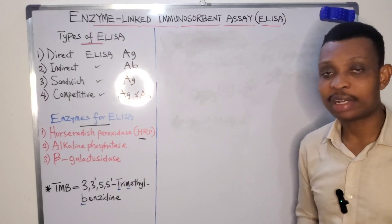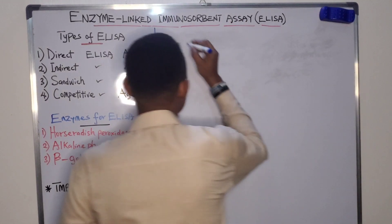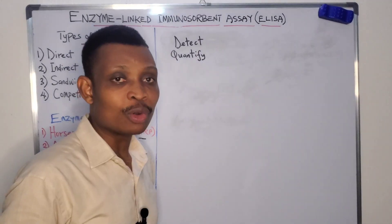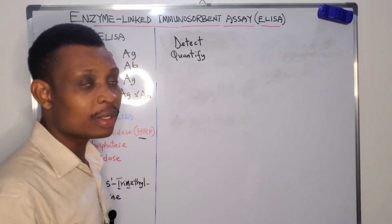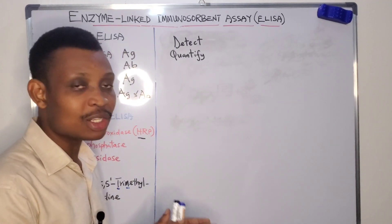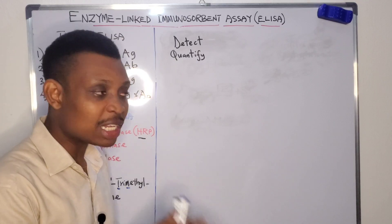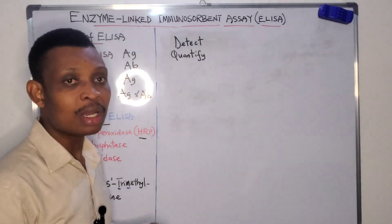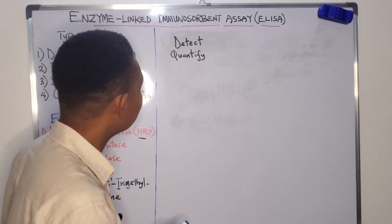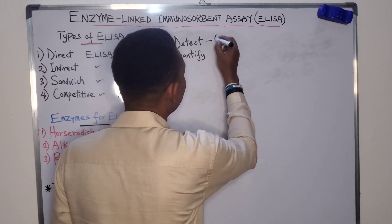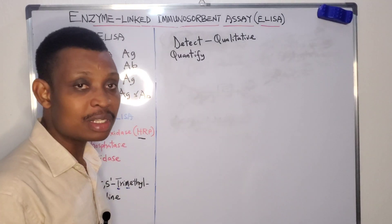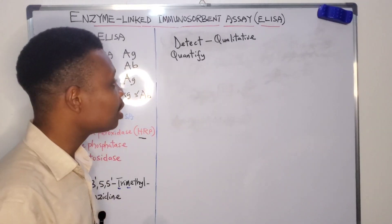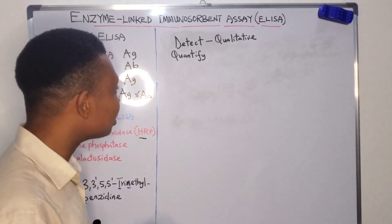There are two keywords: to detect and to quantify. To detect simply means to determine the presence or absence of a specific molecule, and so it can also be referred to as qualitative analysis. Whereas quantify means, if this molecule is present, how much of it is available — and that can be referred to as quantitative analysis.